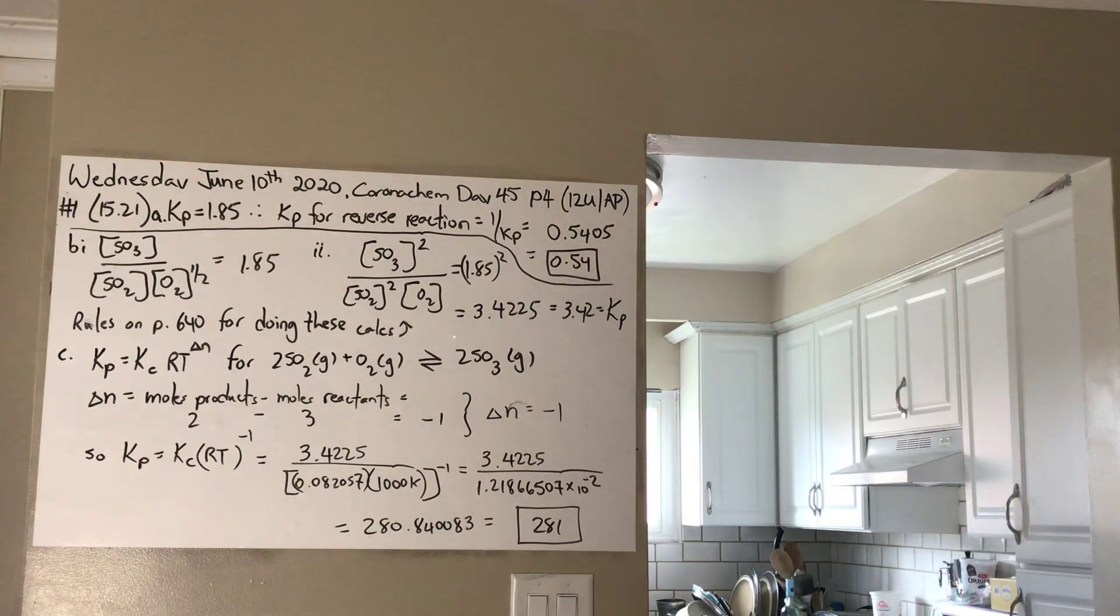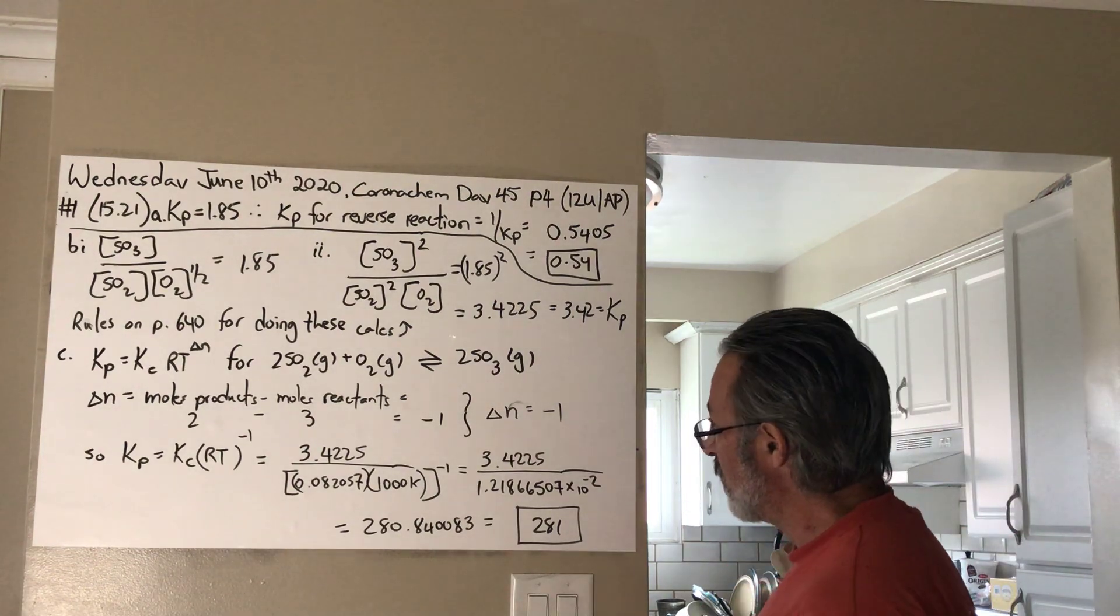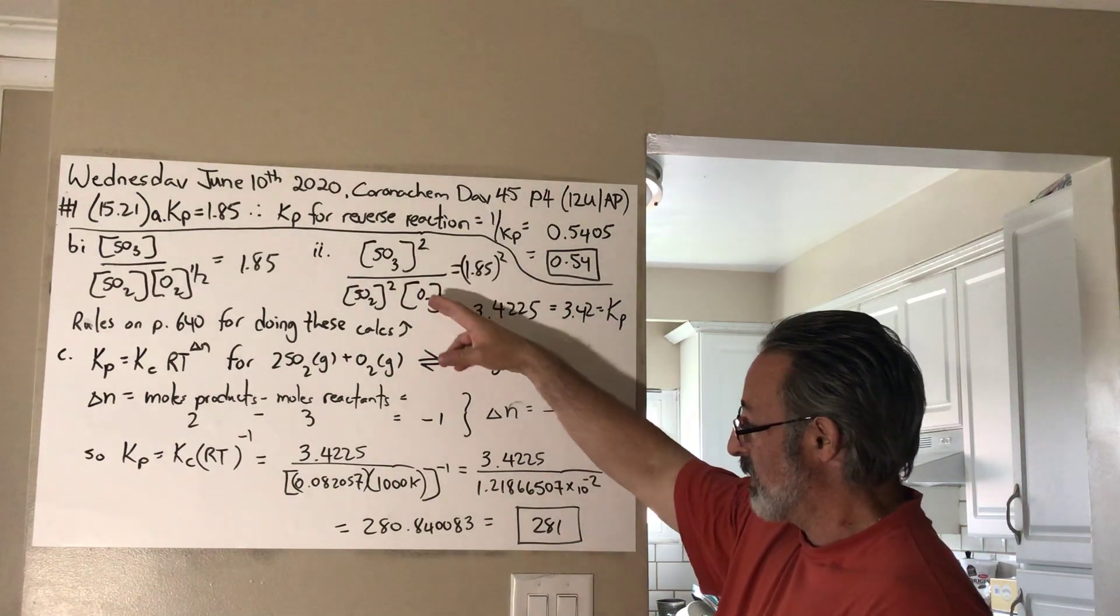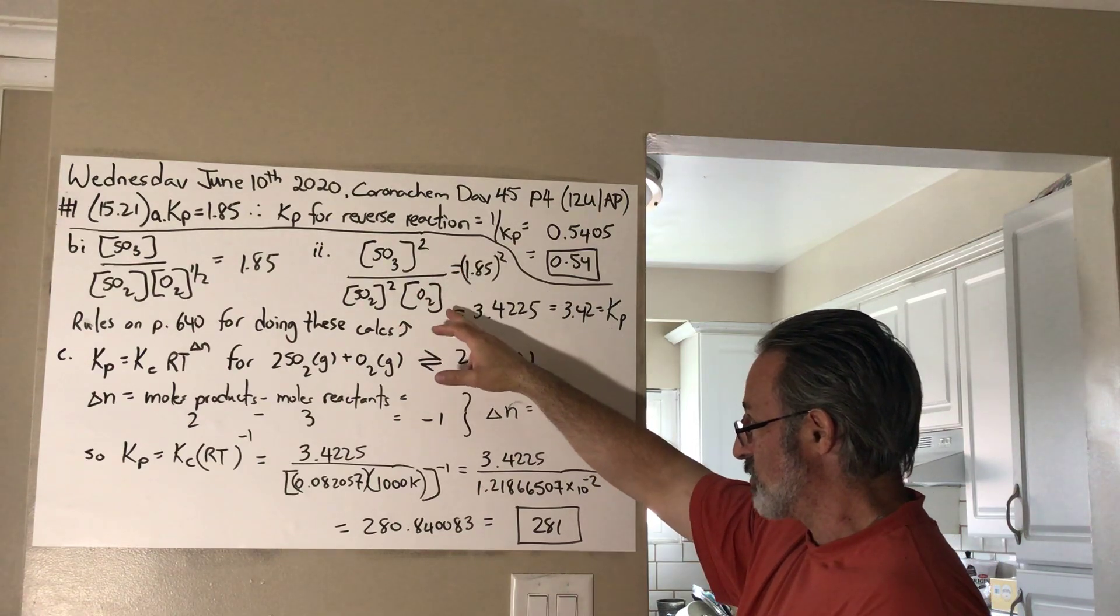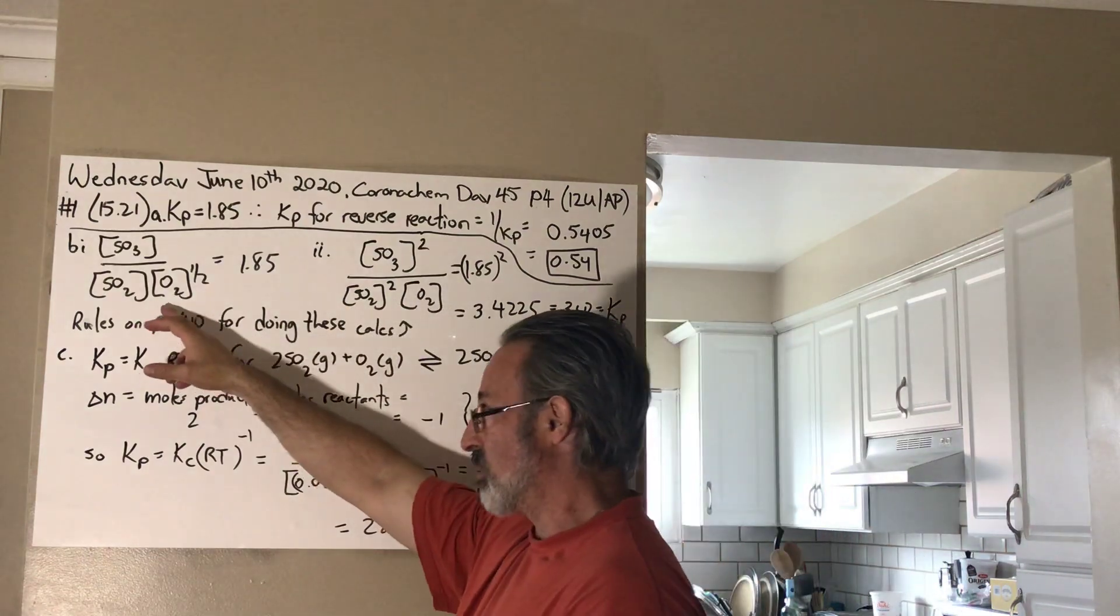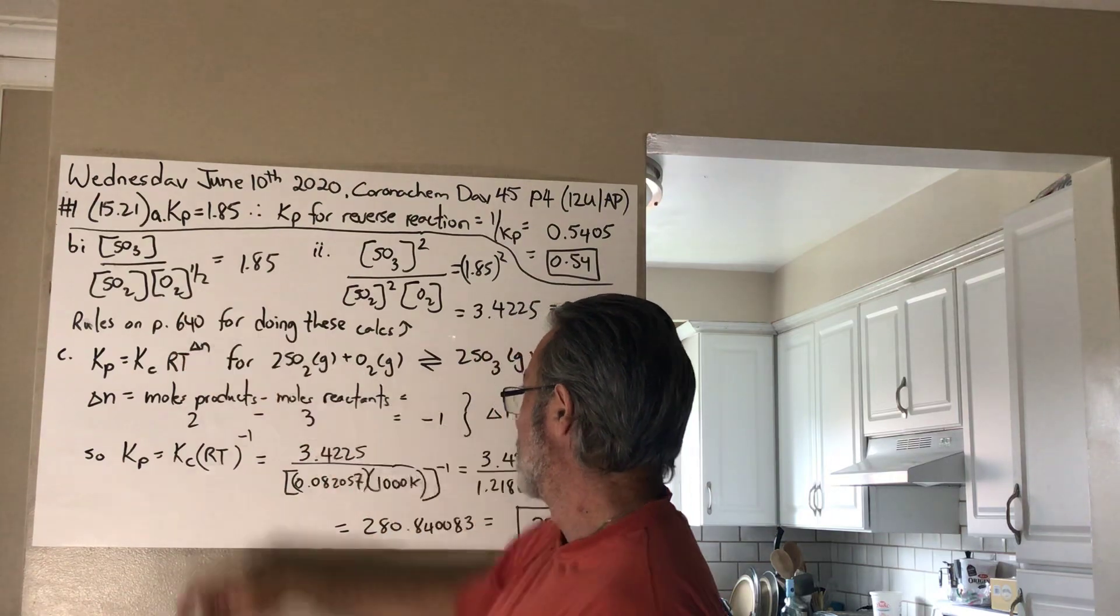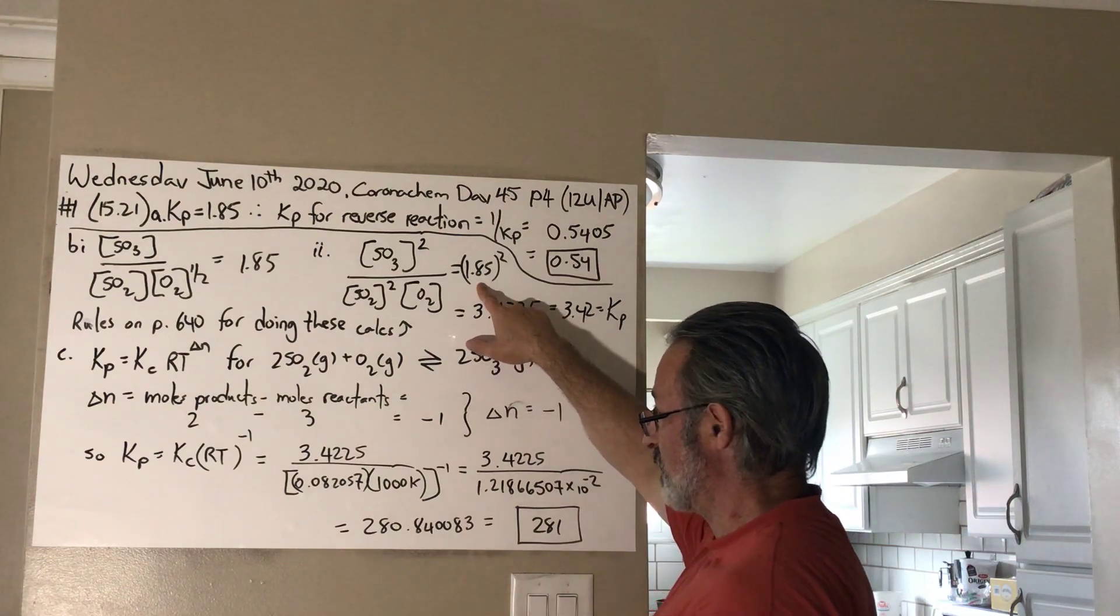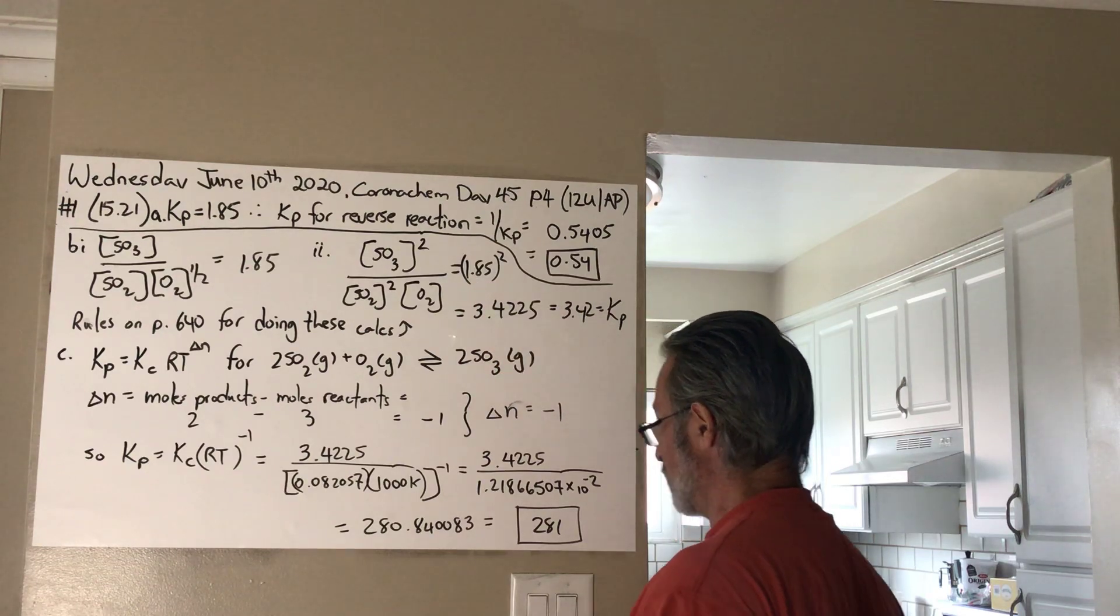Part B of the same question. What is the value of KP for the reaction to SO3? So, basically twice the original reaction. If you double the reaction, you square the value of KP. So, you can depict that KP is equal to SO3 squared over SO2 squared times concentration of O2. For the regular reaction, it's all raised to the power of 1. This one's raised to the power of 1 half. So, it basically doubles all the exponents.